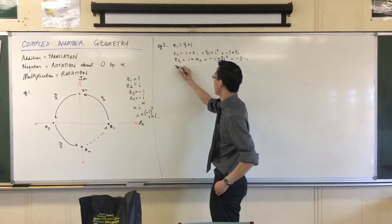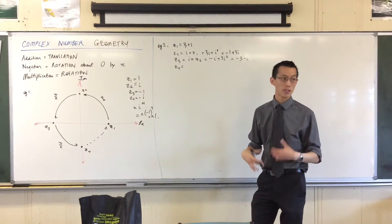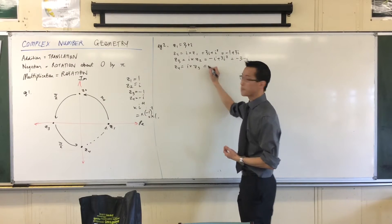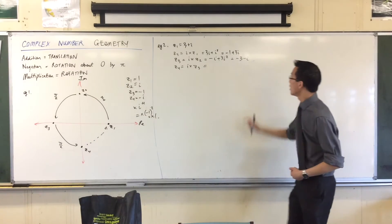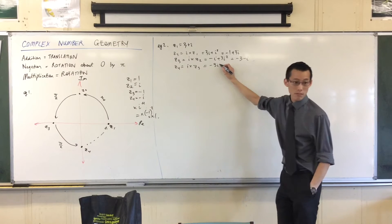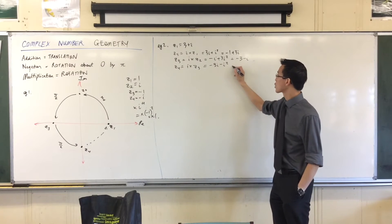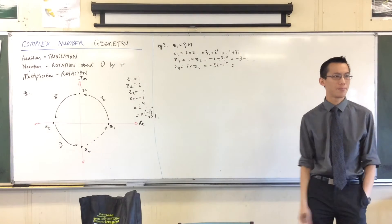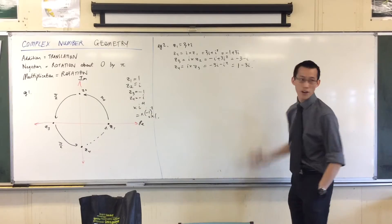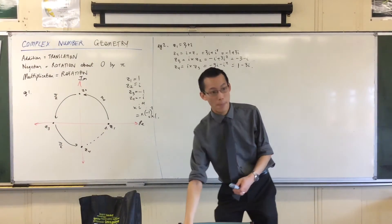We'll do it one last time — z4. If I define z4 as what happens when I multiply the previous one by i again, i times z3, I'm going to get minus 3i minus i squared. And then what's the real part? It's 1. So z4 is 1 minus 3i. Now I know where all four of my points are.